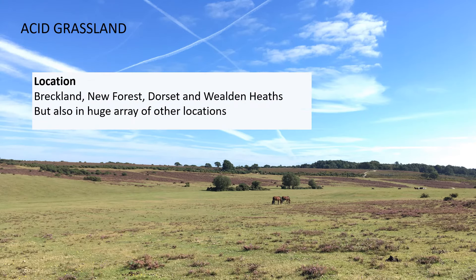In terms of location, the real stronghold for lowland acid grassland is the Brecks, the New Forest, the Dorset heaths, and the Wealden heaths on the Sussex/Surrey border — but small bits also pop up in a huge array of other locations. As you can see in this image, you can spot the heather and where the heathland begins, so we then move on to heathland.